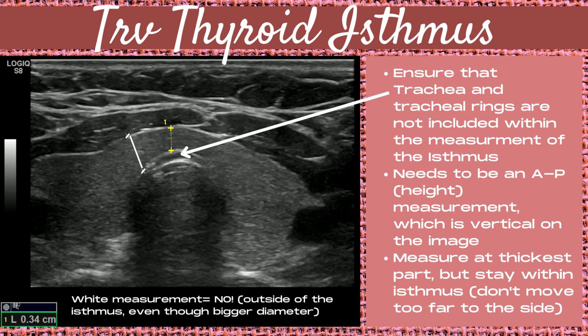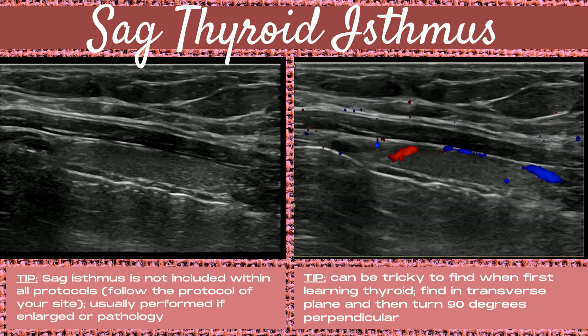Pro tip: the white measurement shown in this diagram is a big no — this is outside of the isthmus, even though you're getting a bigger diameter. Images of the sagittal thyroid isthmus are typically not included in thyroid protocols; follow the protocol of your site. The sagittal isthmus is usually only imaged if pathology is visualized within the transverse isthmus or if it is enlarged. It can be tricky to find — my pro tip is to find it first in the transverse plane and then turn 90 degrees perpendicular.